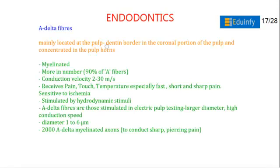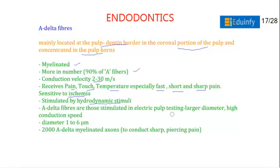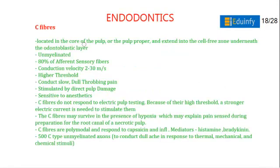A-delta fibers are mainly located at the pulp-dentine border in the coronal portion of the pulp and are concentrated at the pulp horns. They are myelinated, comprising approximately 90% of A fibers. Their conduction velocity is 2 to 30 meters per second. They receive pain, touch, and temperature sensations — especially fast, sharp, and short pains. A-delta fibers are sensitive to ischemia and stimulated by hydrodynamic stimuli, as well as by electric pulp testing. Their diameter is 1 to 6 micrometers; there are approximately 2,000 A-delta myelinated axons, conducting sharp and piercing pain.